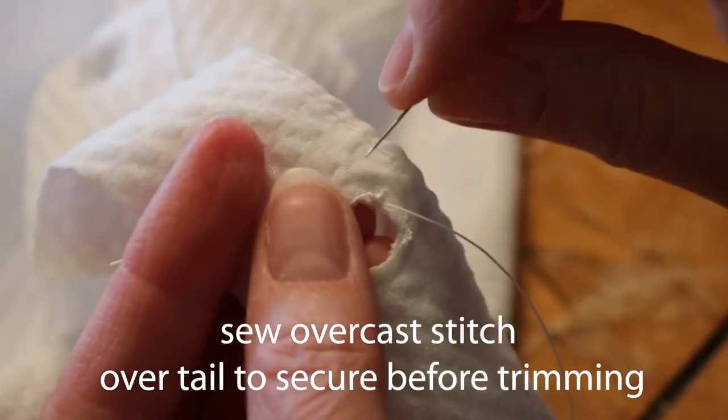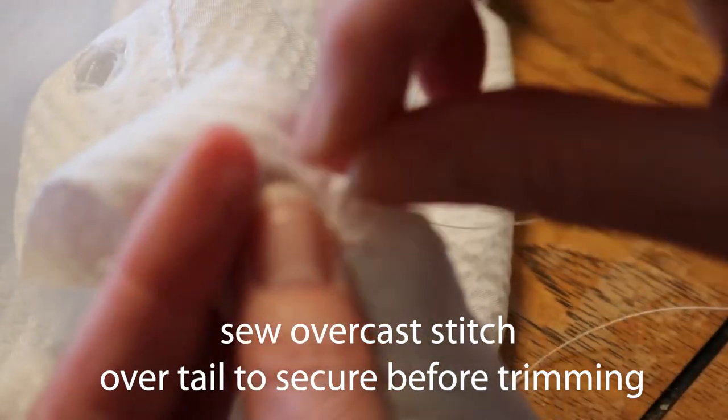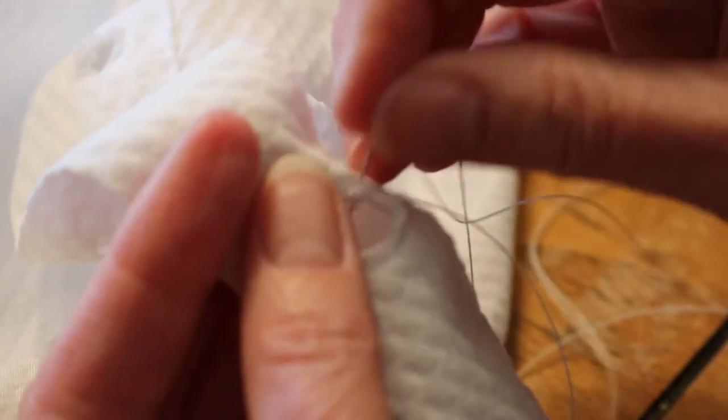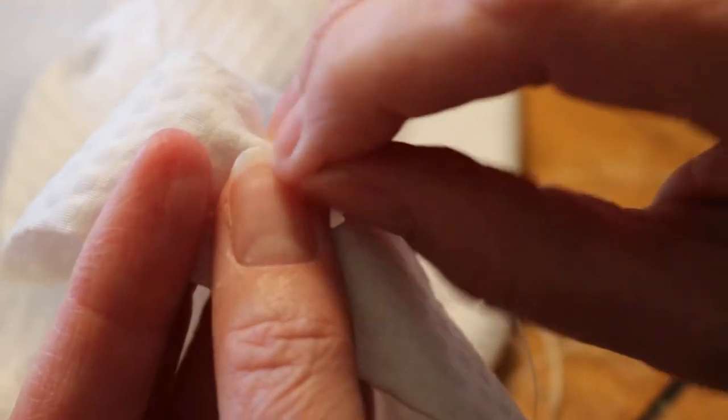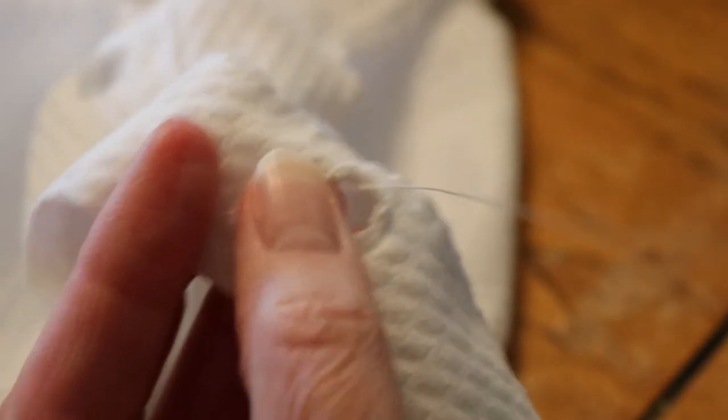Sew an overcast stitch. I like to do this over the tail for several stitches before trimming the extra thread off the end of the tail.